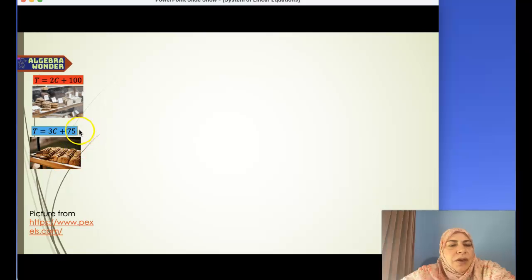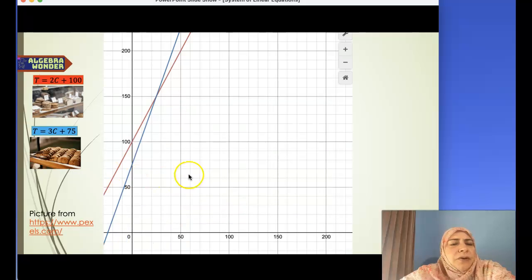The second company charges $75 as an initial amount and then $3 for each dozen cookies. Both prices are per dozen cookies. Now let's graph both of them. The first company is the red line. The second company is the blue line. Let's see what this graph tells us.